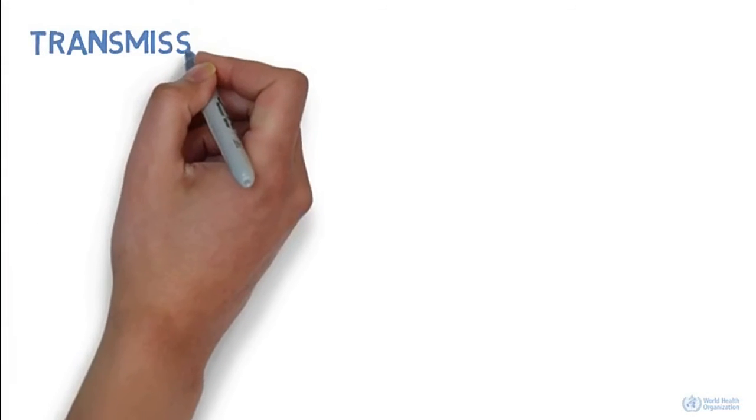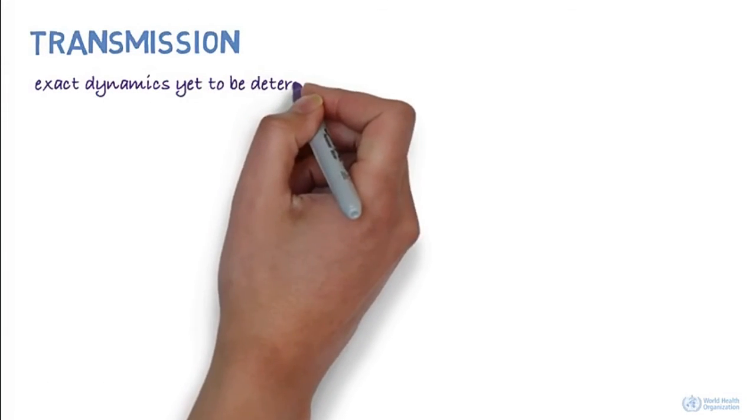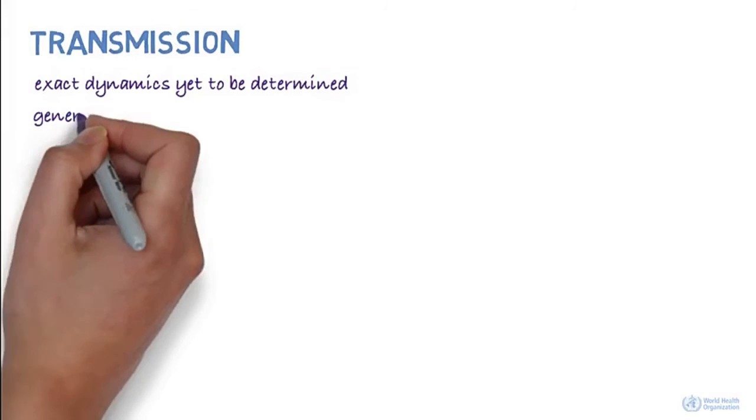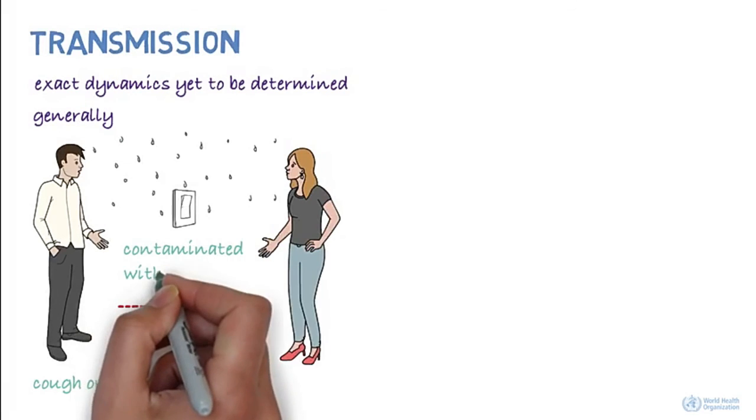How is it transmitted? The exact dynamics of how the virus is transmitted is yet to be determined. In general, respiratory viruses are usually transmitted through droplets, created when an infected person coughs or sneezes, or through something that has been contaminated with the virus.